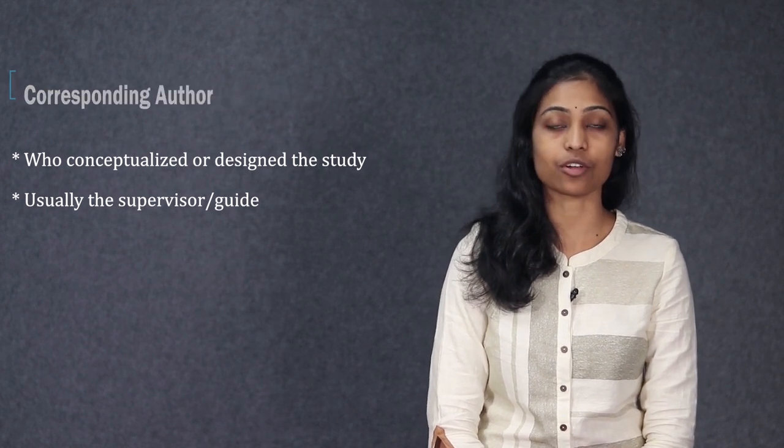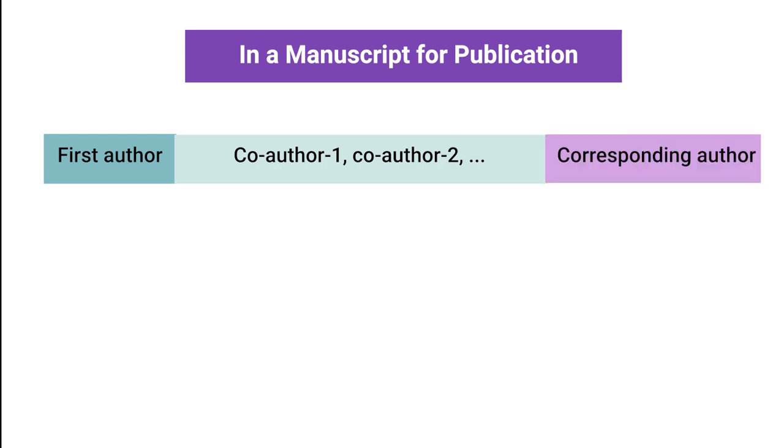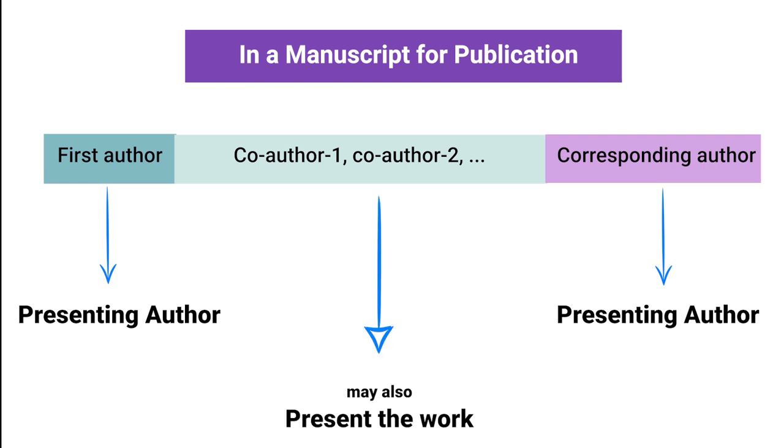A corresponding author is generally the person who has conceptualized and supervised the work and is usually the guide or mentor of the first author. So, in a publication, the sequence of authors is first author followed by co-authors and ending with the corresponding author. Only the proposed corresponding author or the first author can present a particular work at any conference because they are the ones who either conceptualized the project or contributed the most towards it. However, co-authors may also present the work if the corresponding author has no objection.